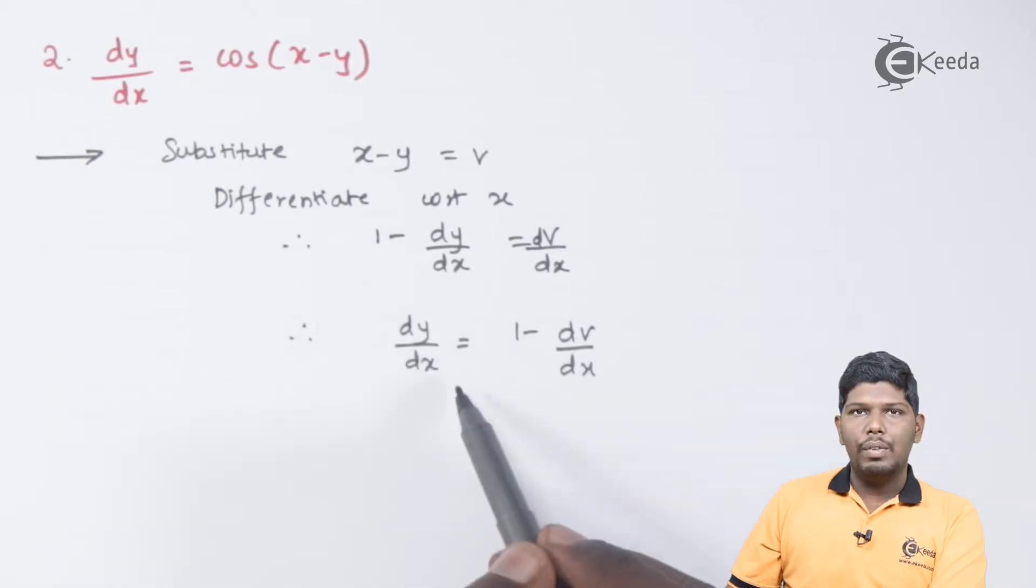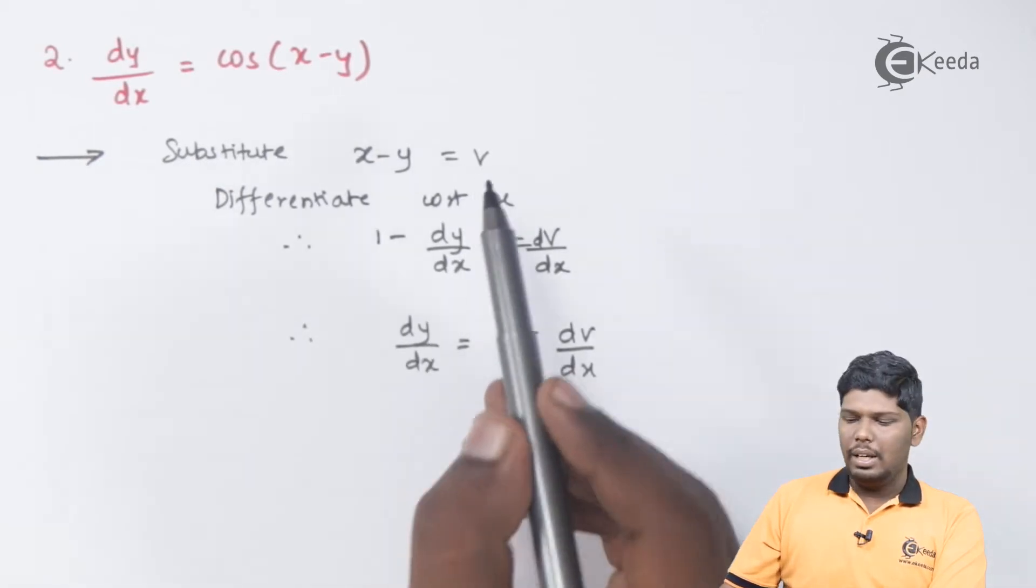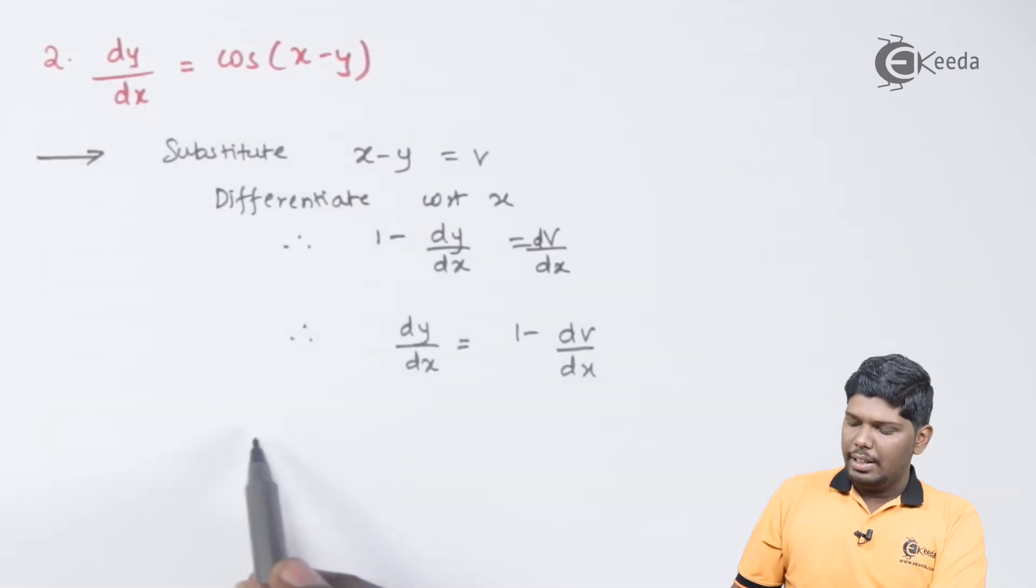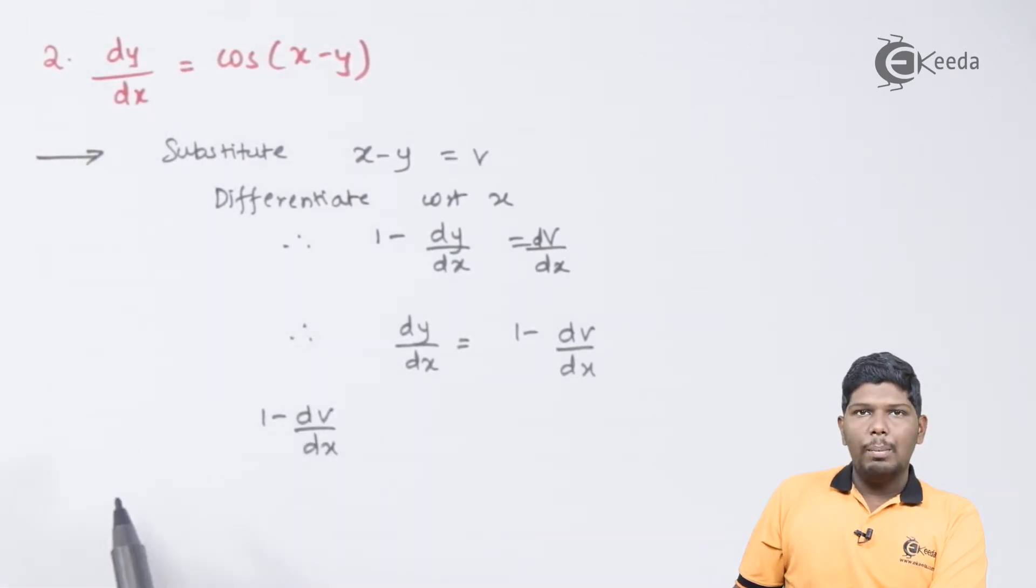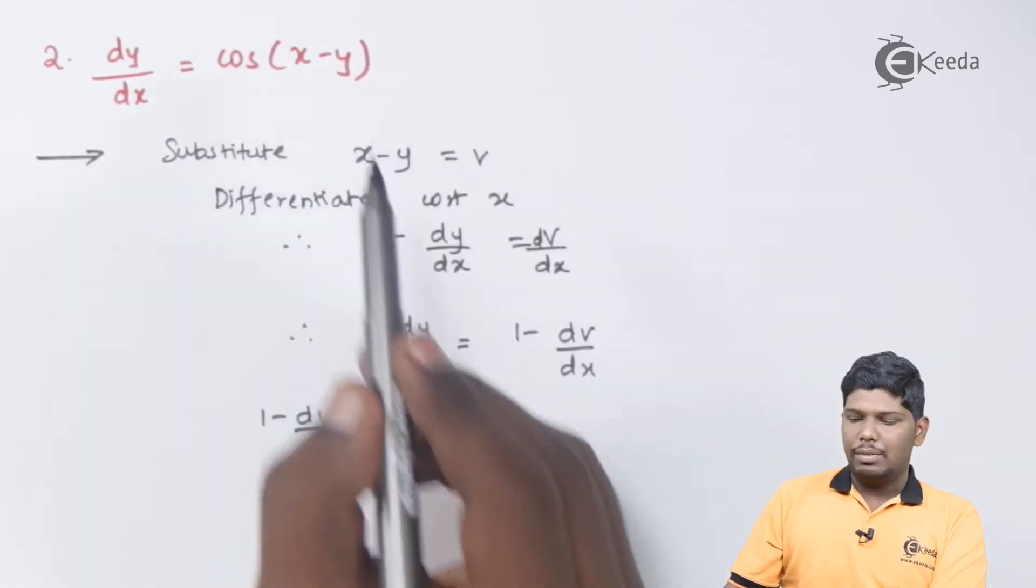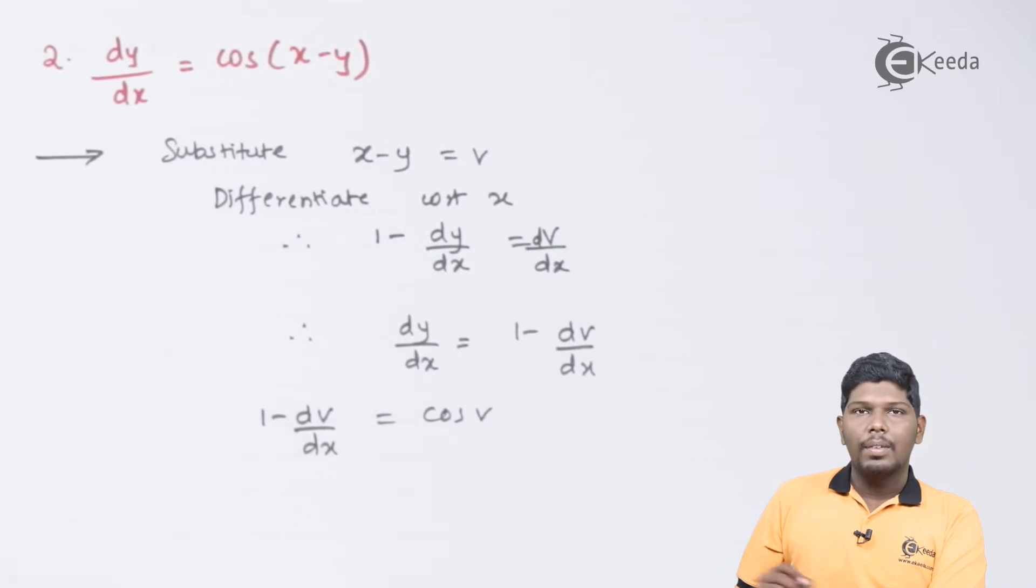Now, let us substitute the values of dy by dx and the value of v in the given sum. So we have dy by dx, that is 1 minus dv by dx, and we have x minus y as v.